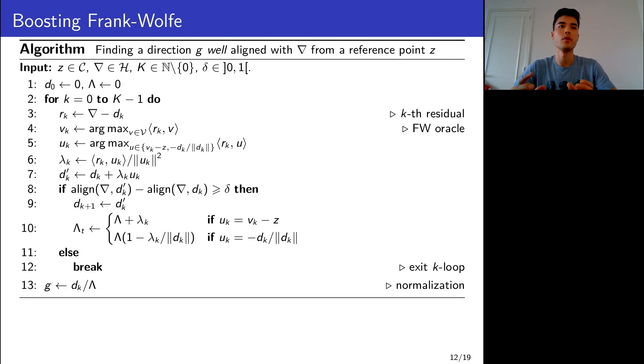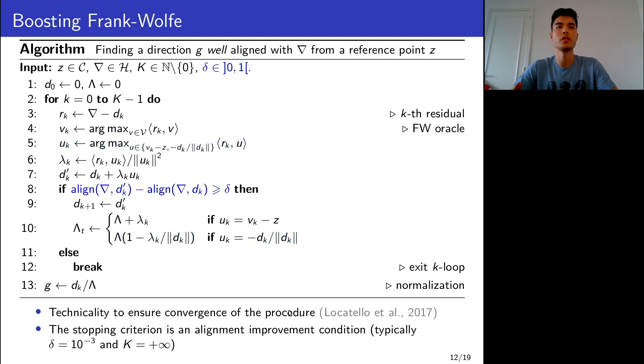This is just writing down what we have been drawing before, but more generally. From a reference point z, chasing a direction ∇. In our case, z was x_t and ∇ was the negative gradient. Also note here this technicality just to ensure convergence of the procedure. I'm not sure actually if you really need this in practice, but I chose to leave it there just to be rigorous.